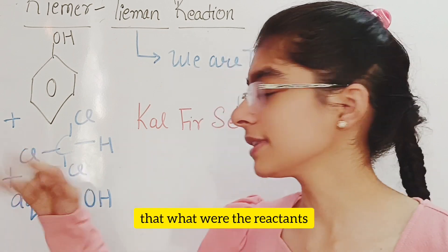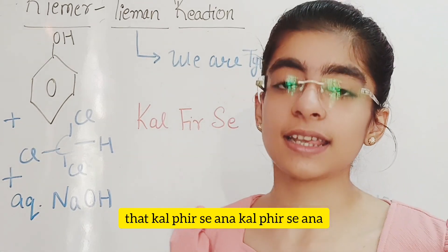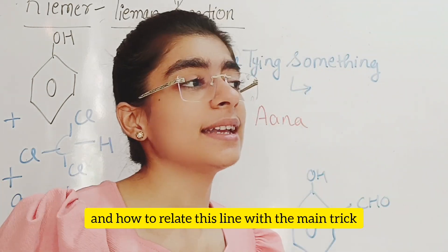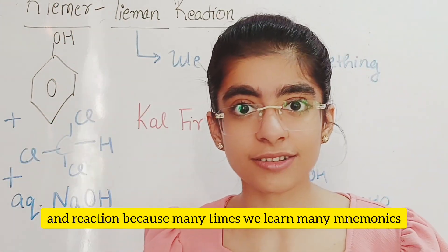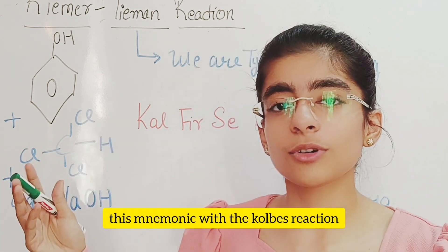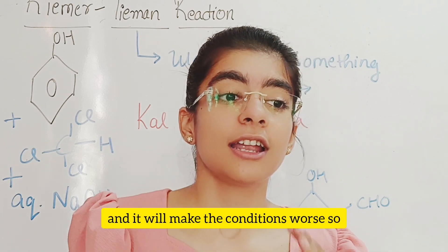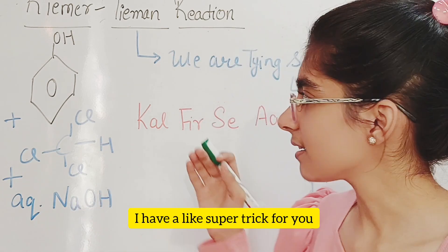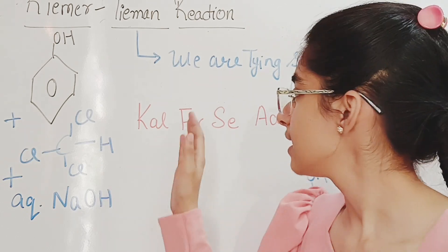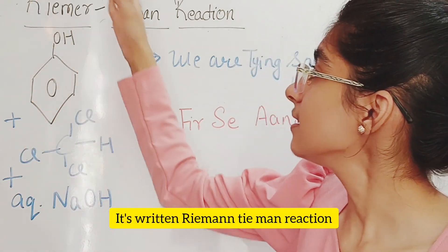So how to learn what the reactants were and what the product was? I have a trick for you: KAL FIR SE AANA. And how to relate this line with the main trick — that is Reimer, Tiemann and Reaction. Because many times we learn mnemonics but get confused about which mnemonic belongs to which reaction, so I have a super trick for you where I will relate this mnemonic with the main reaction, that is Reimer-Tiemann Reaction.